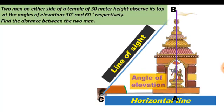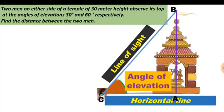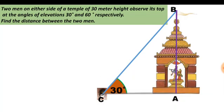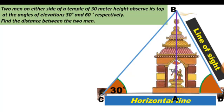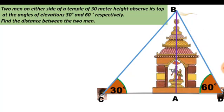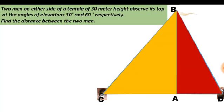The first person observes the top of the temple at an angle of elevation 30 degrees. Now let us take the position of the second person who is observing the temple from the other side as D. The second person observes the top of the temple with an angle of elevation 60 degrees. We get two right triangles: triangle ABC with angle 30 degrees, and triangle ADB with angle 60 degrees.